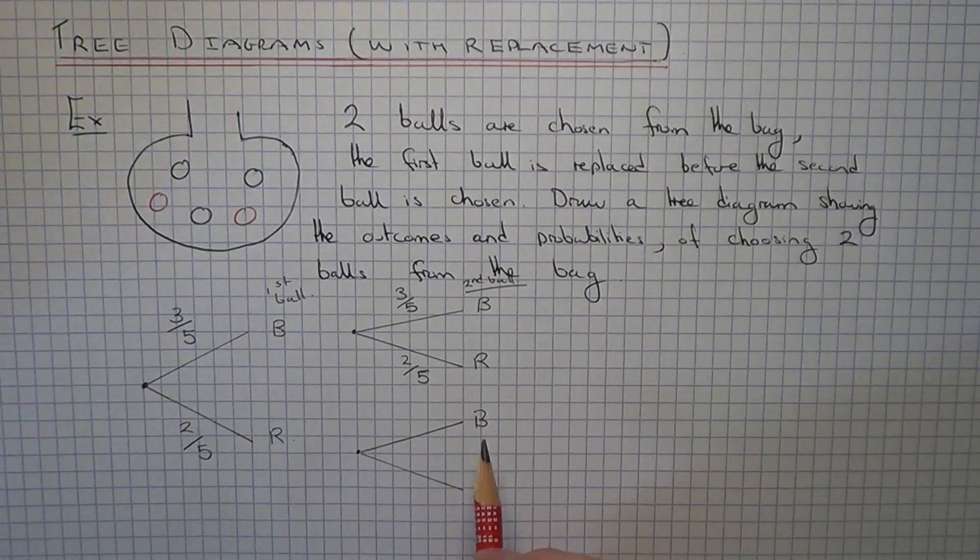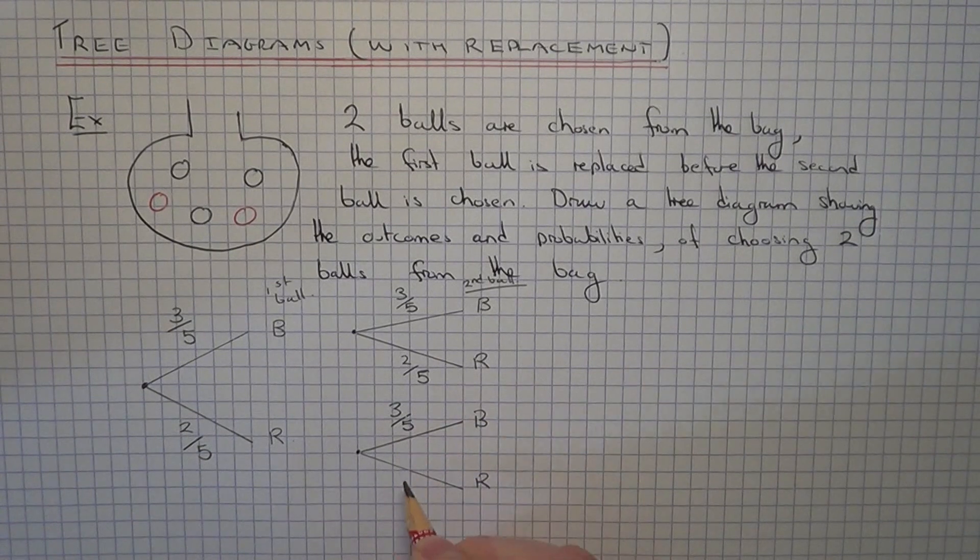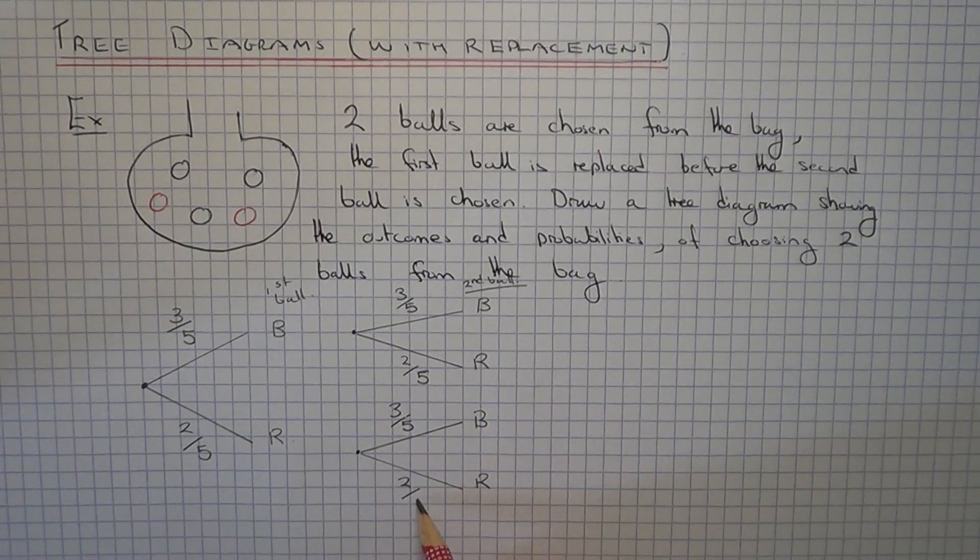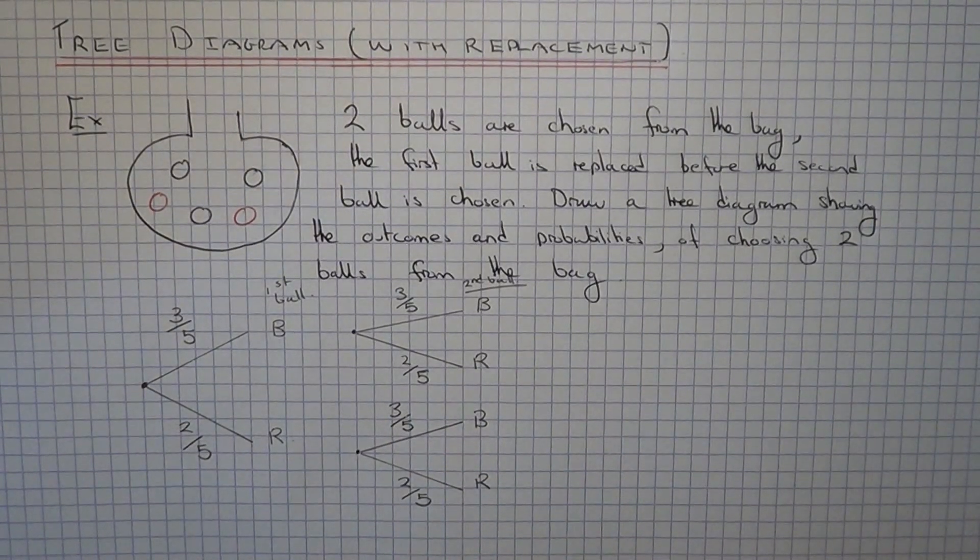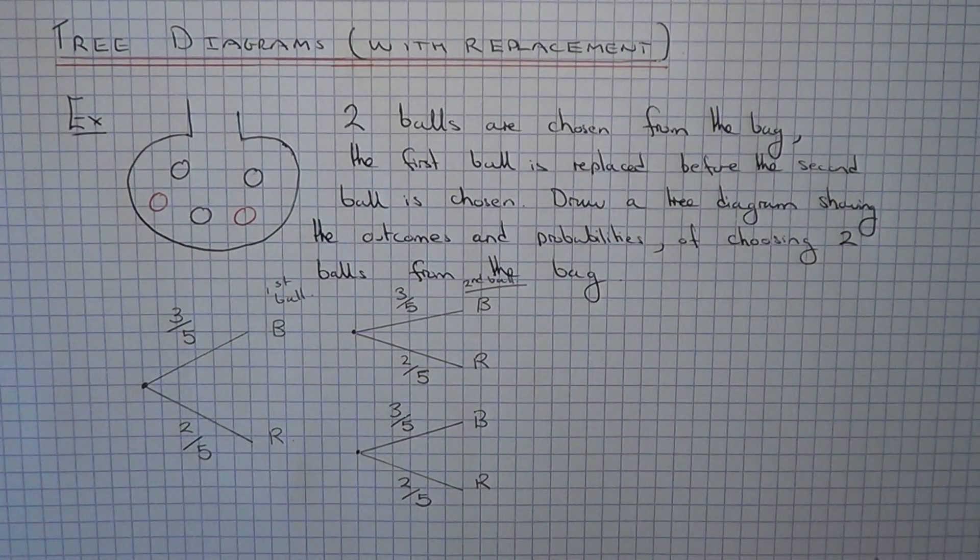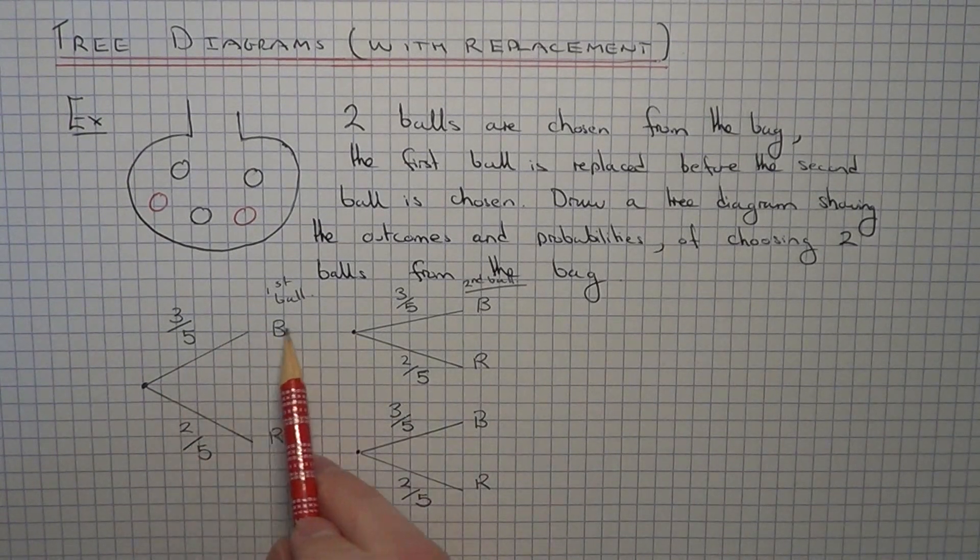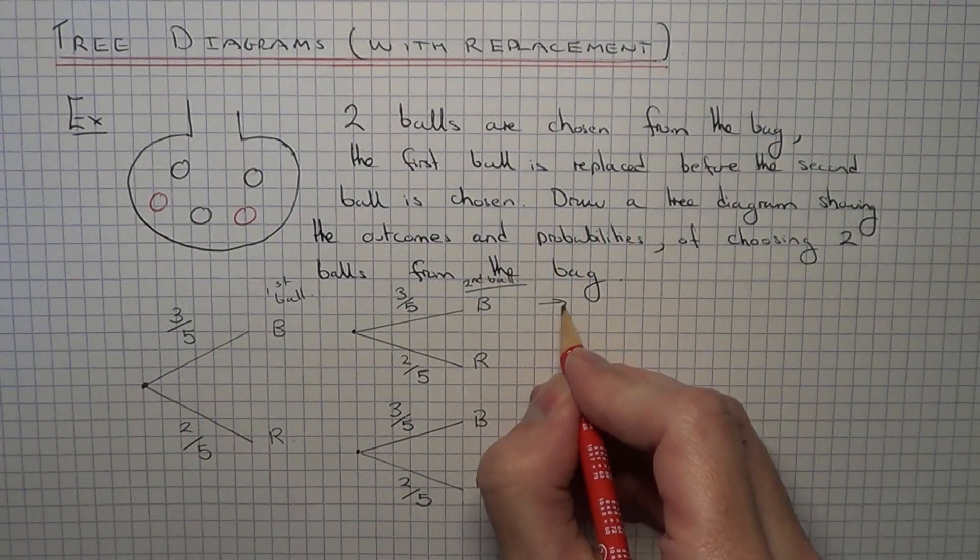And these probabilities will be the same because we have the same amount of balls in the bag still. We've just got to work out now the probabilities of picking two balls from the bag. So if we follow the top route of the tree diagram, this is picking out a black and a black ball.